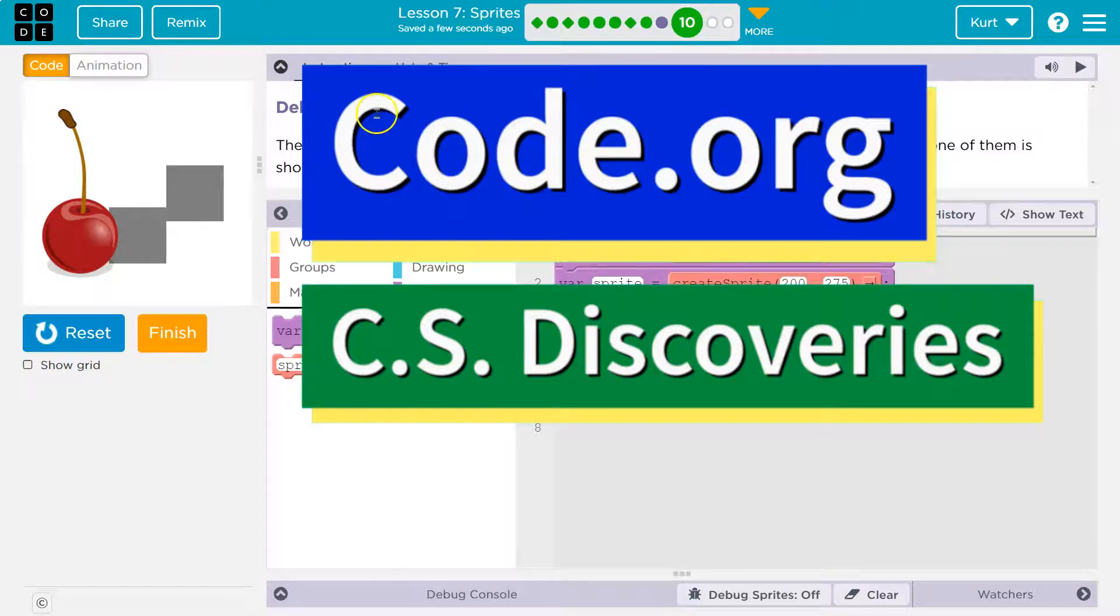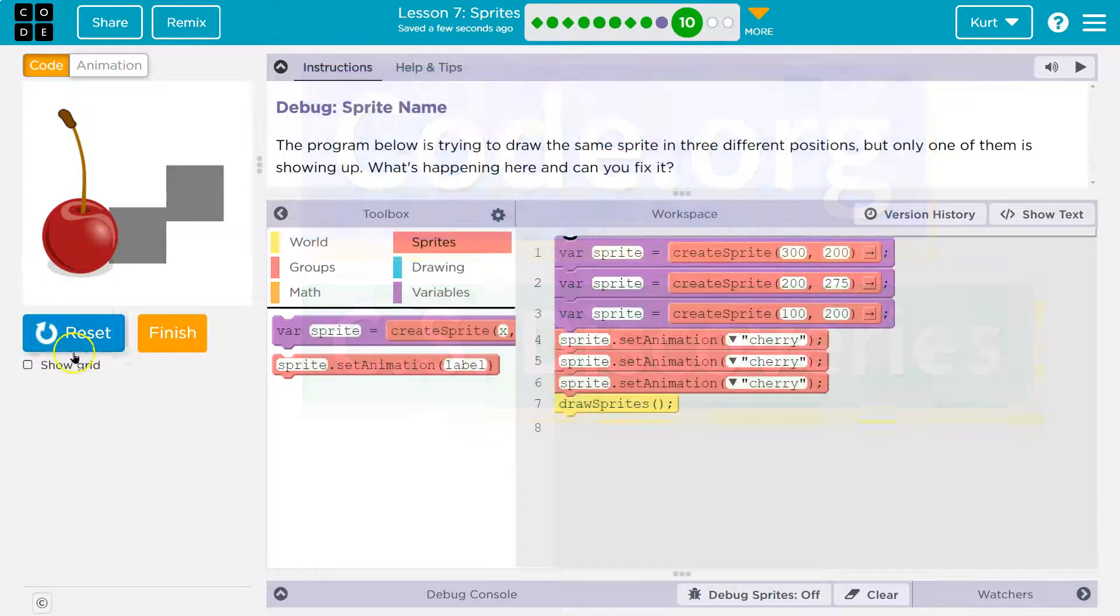This is code.org. Let's see what we're doing. Debug the sprite name. So I hit run and we got a cherry and some squares. The program below is trying to draw the same sprite in three different positions, but only one of them is showing up. What's happening here? Can you fix it?